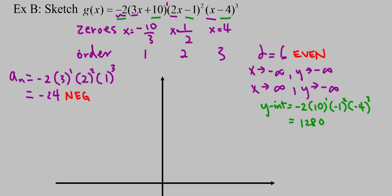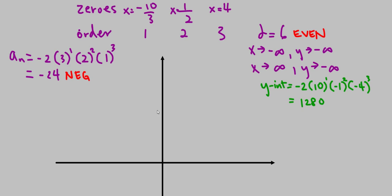This is a really big y-intercept and I'm not going to make the graph to scale — I just want to sketch it to get the idea. I'll write the zeros in: negative 10 over 3, then 1 half — they should be in order — and x equals 4.